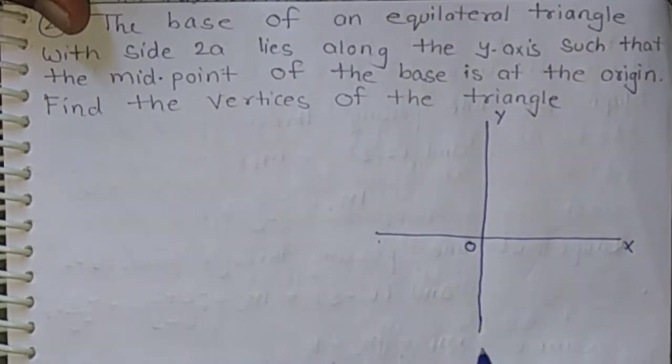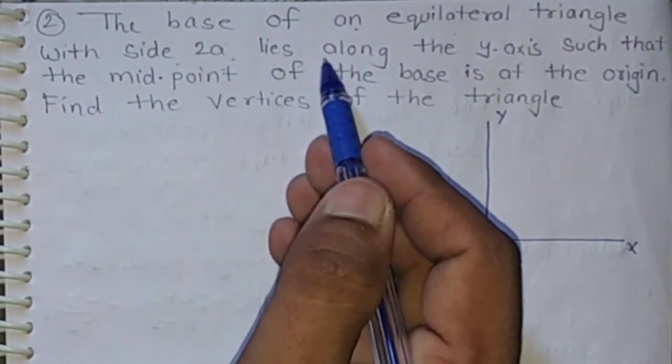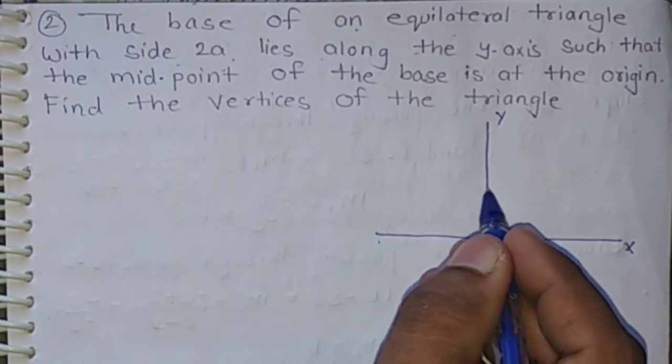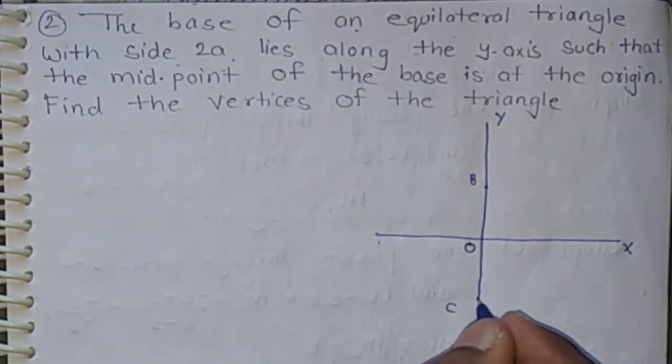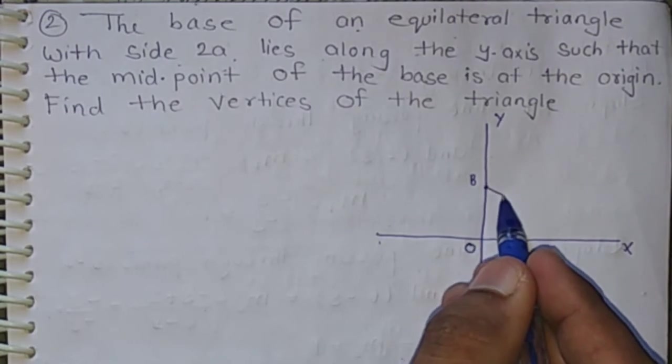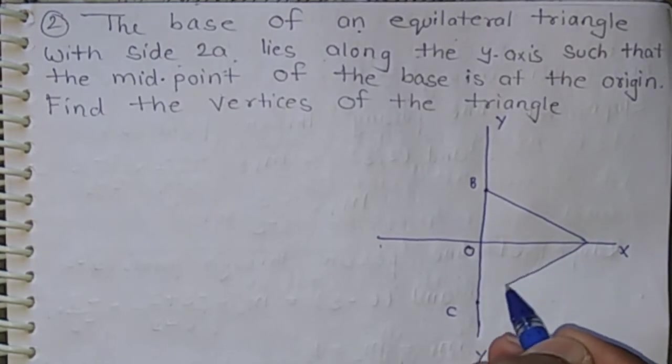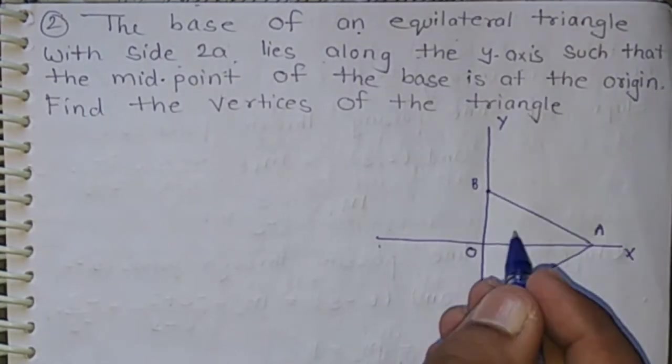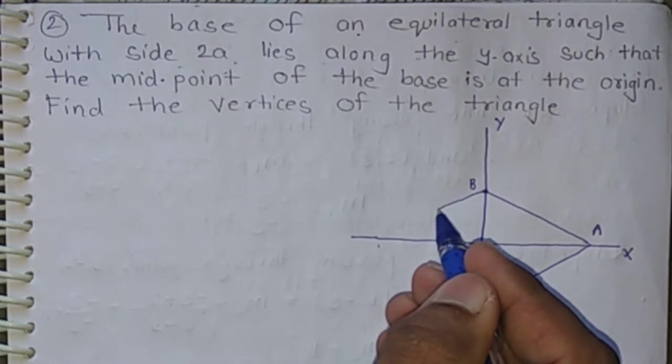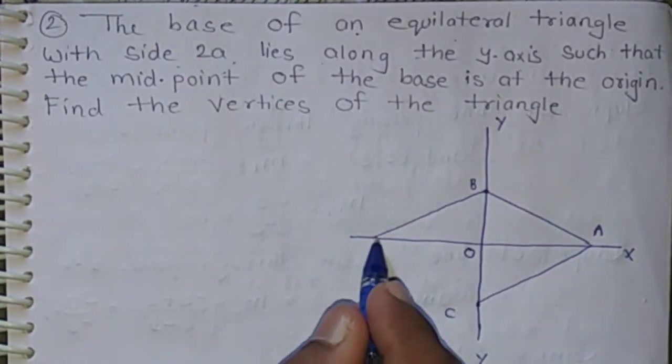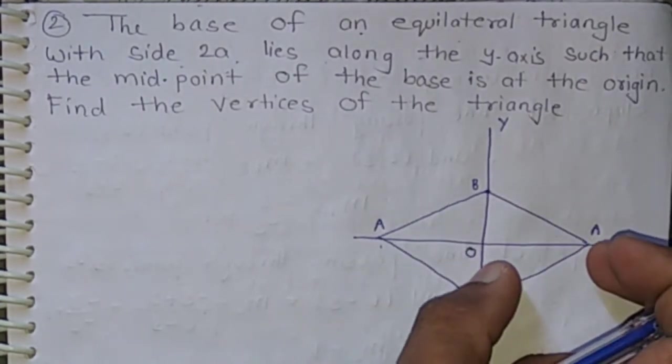Now, according to the question, the base of an equilateral triangle with side 2a lies along the y-axis. If it is point B and it is point C, it is the base of triangle. Then triangle ABC is either on the right side of y-axis or on the left side of y-axis. It is either triangle ABC or triangle A'BC.